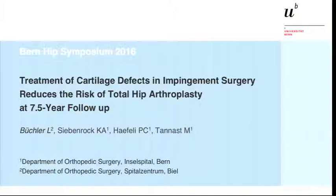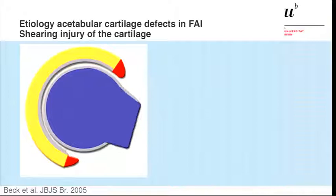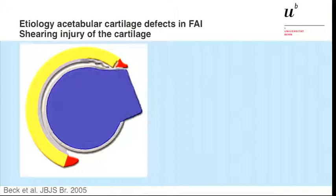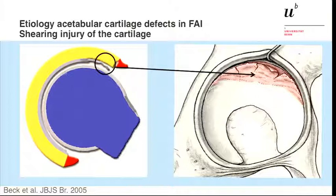I'll bring up a similar topic to what Professor Gunter talked about. I will present this animation that you've probably seen many times before, but I like it because it's so illustrative of what happens in cam impingement — when we flex the hip and the bump squeezes itself into the acetabulum, causing this shearing injury and the very typical defect that we see when we perform this kind of surgery.